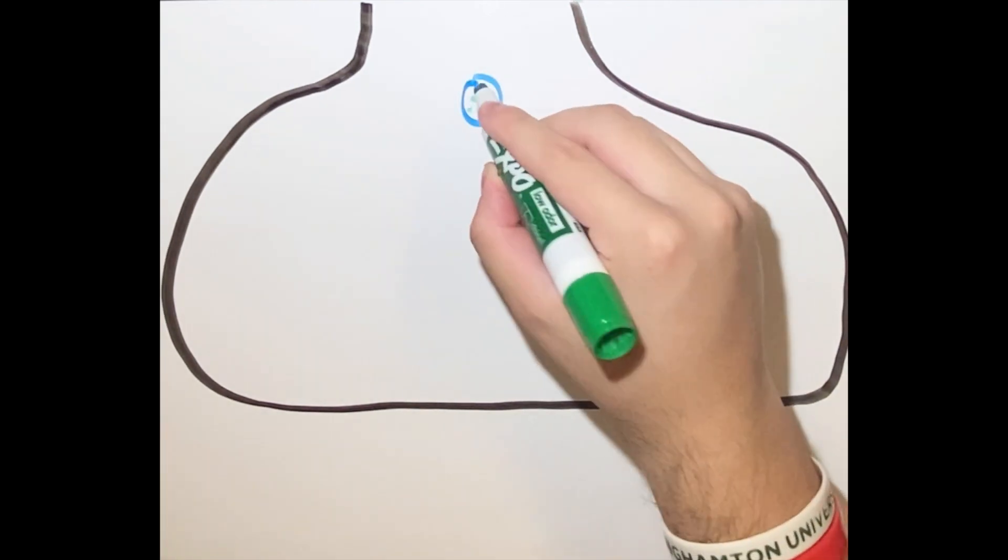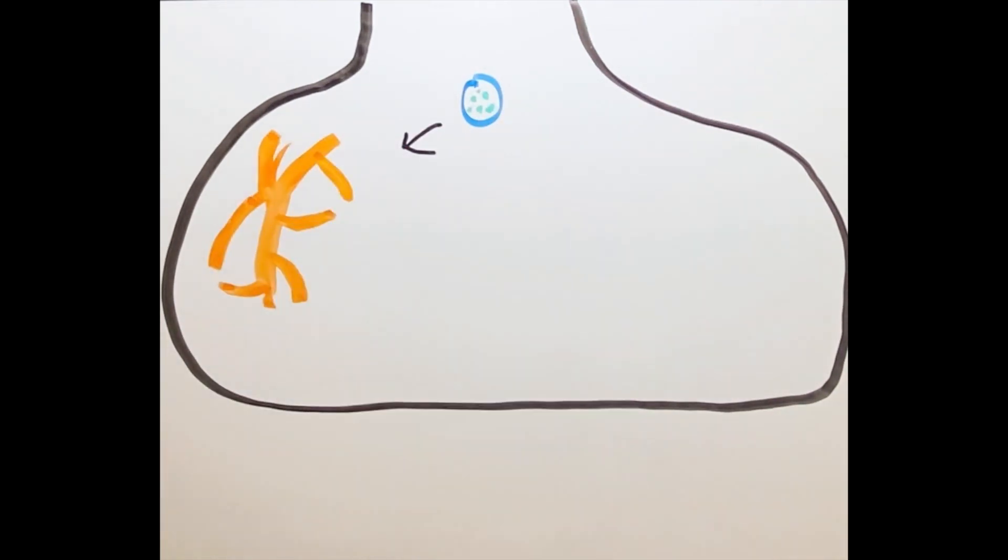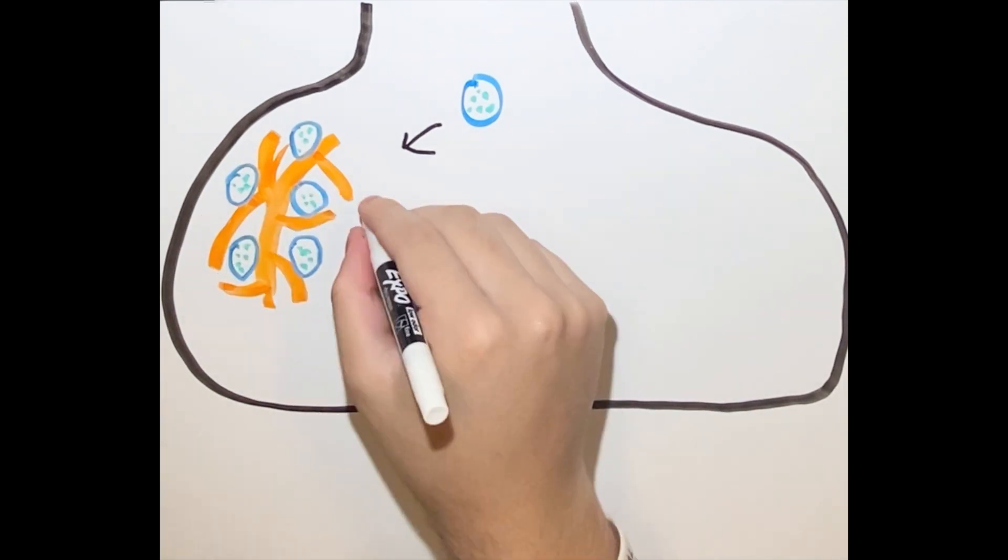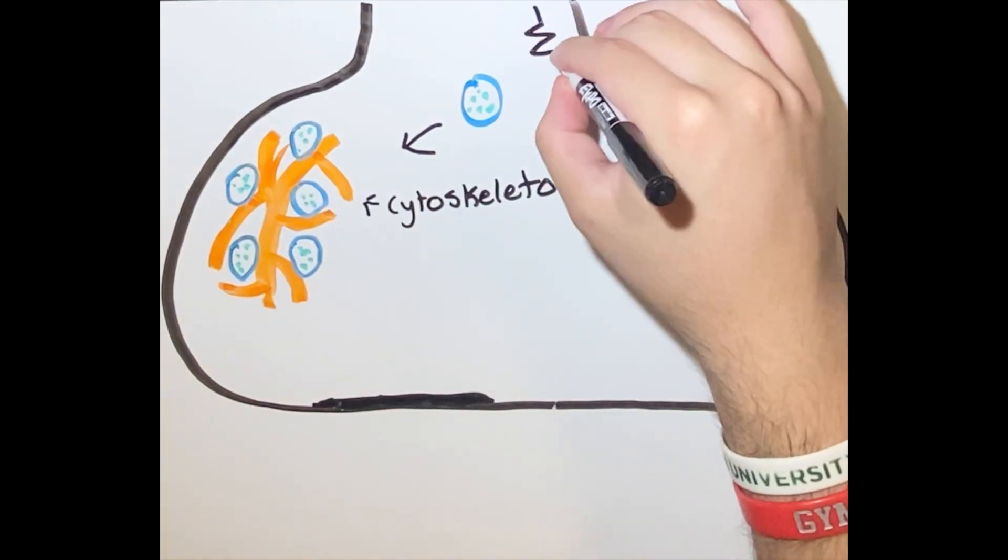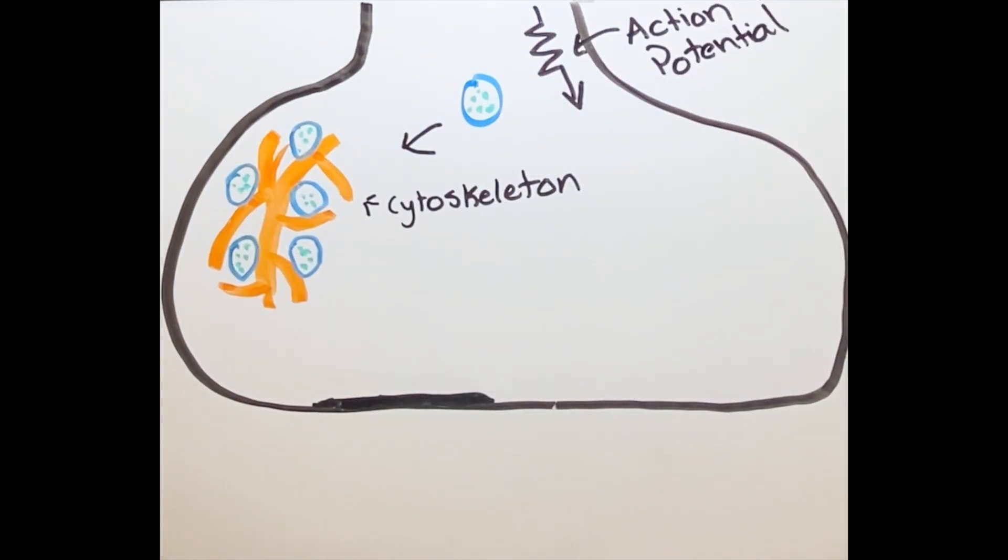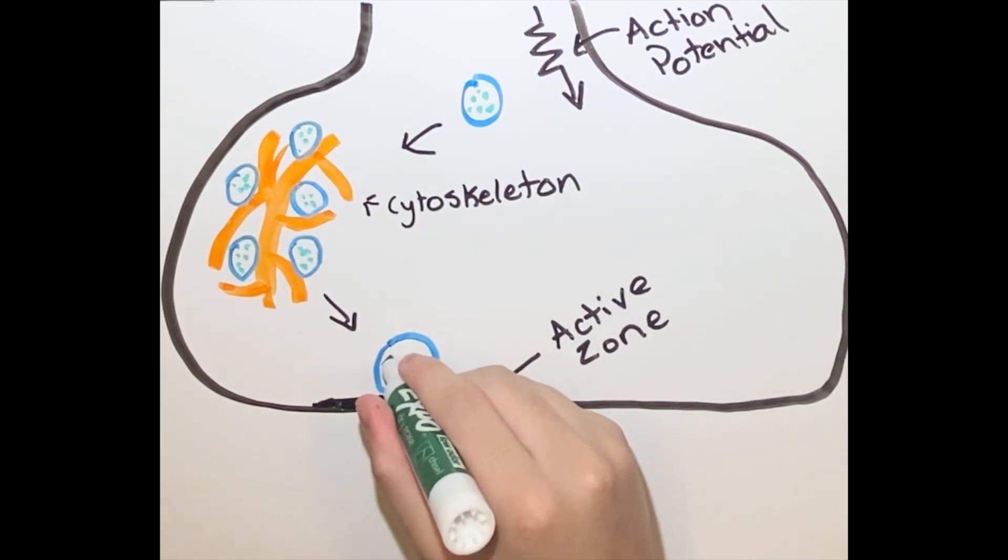Once the vesicle is full, it will move along the cytoskeleton to be stored. It will remain unused until an action potential occurs in the neuron and reaches the axon terminal. When the action potential happens, the vesicle will be put into motion, moving towards the active zone along the presynaptic membrane.